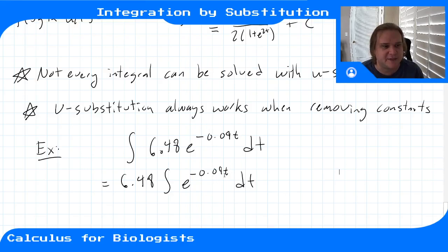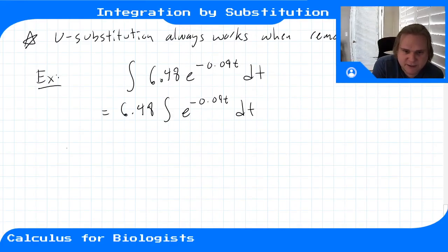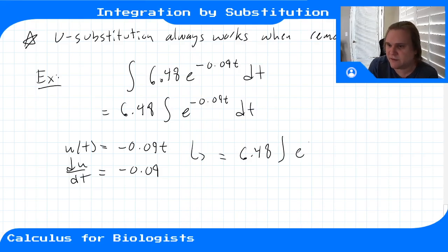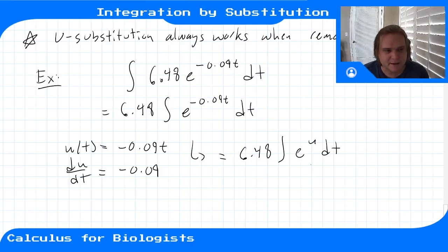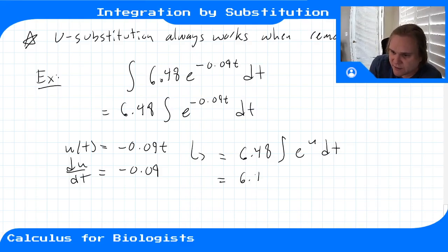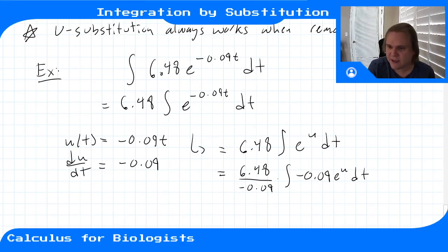We use a u-substitution to get rid of the constant inside the exponent. Let u of t equal negative 0.09t; then du/dt equals negative 0.09. The integral becomes 6.48 times the integral of e to the u dt. But we can't integrate yet because u and t aren't the same variable — we need to get du/dt in there. So we multiply by negative 0.09 and also divide by it.